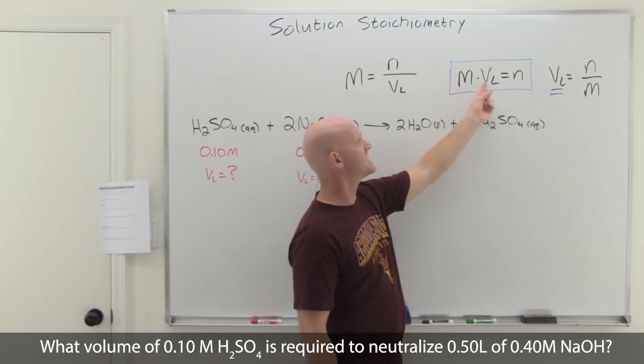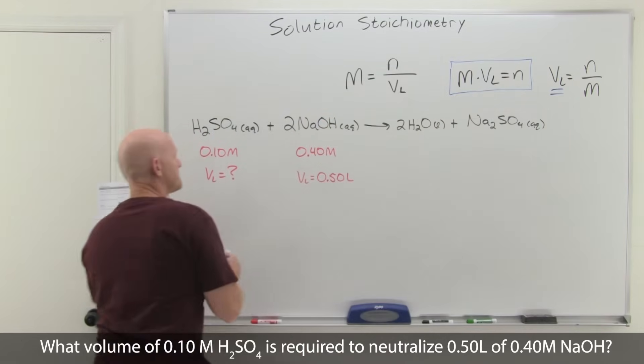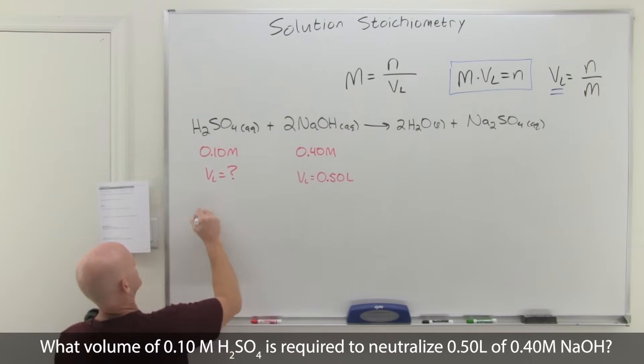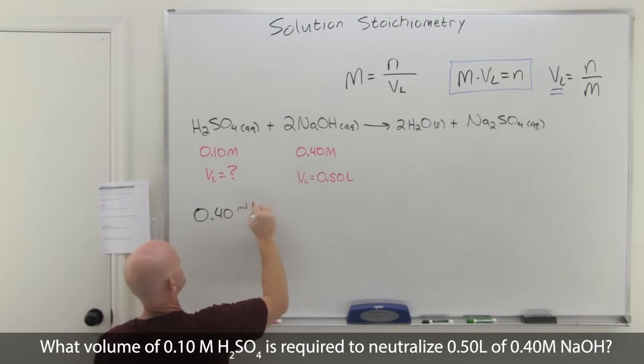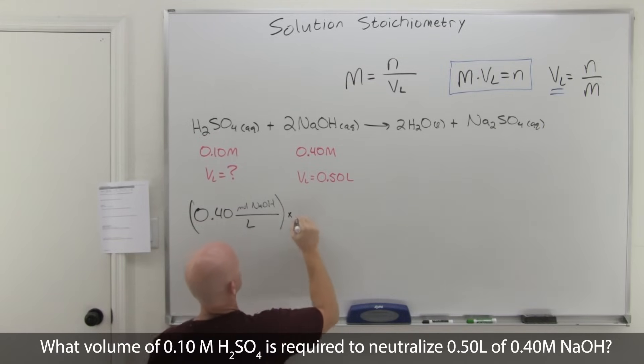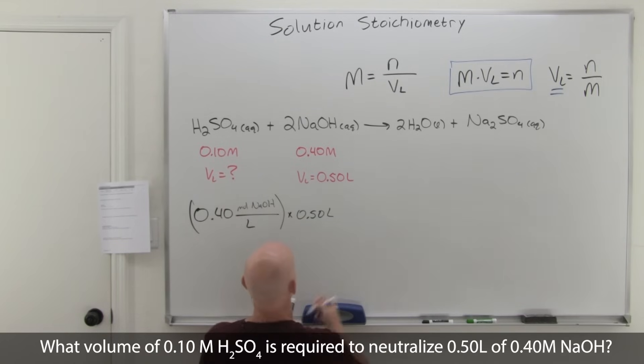That's the approach we're going to take. The first thing I'm going to do is solve for that number of moles of NaOH. That's just molarity times liters equals moles. So 0.40 moles NaOH per liter times 0.50 liters, and we'll get the liters to cancel.